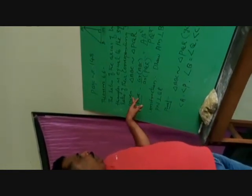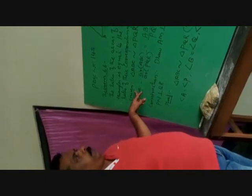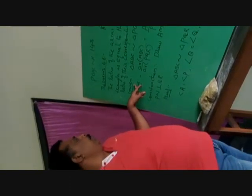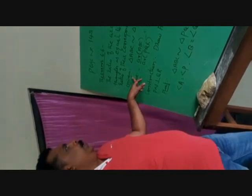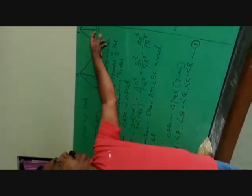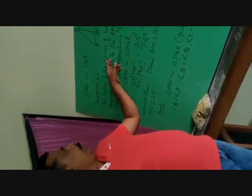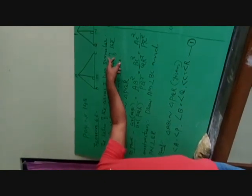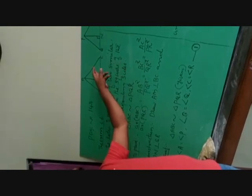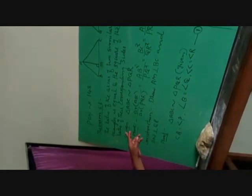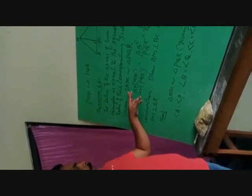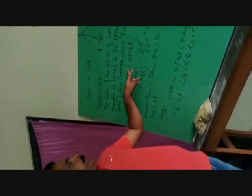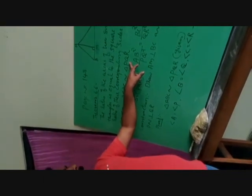Theorem 6.6. First, we have to write what is given. In the statement, there is mentioned these two triangles are similar triangles. According to the statement, there is given the ratio of two similar triangles — it means these two triangles are similar. That is why we can write here first what is given: Triangle ABC similar to triangle PQR.